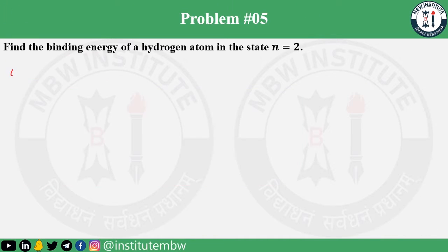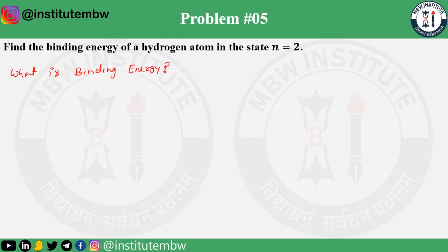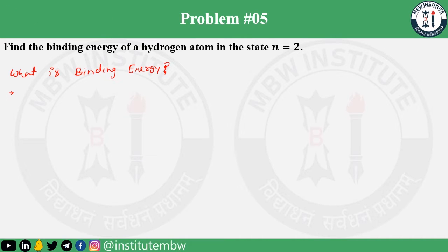Let us discuss about it. The binding energy of a system is defined as the energy released when its constituents are brought from infinity to form the system. Oppositely, we can say it is the energy needed to separate its constituents to a large distance — you can say infinity. So that is binding energy.